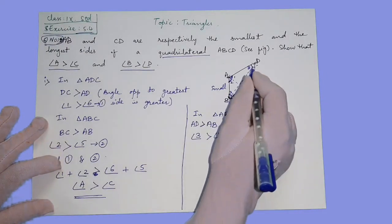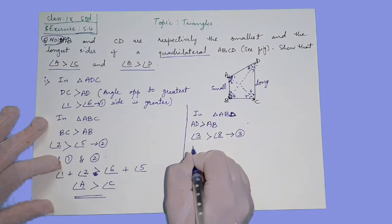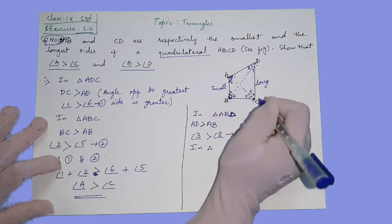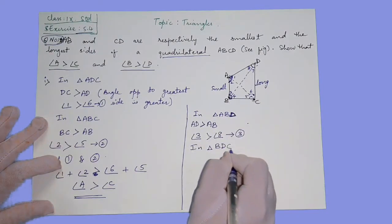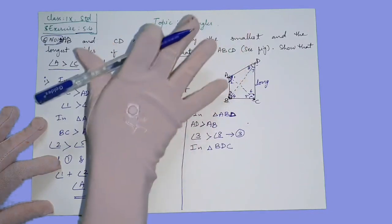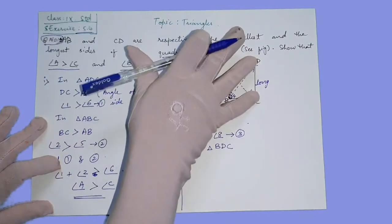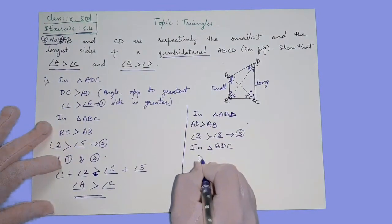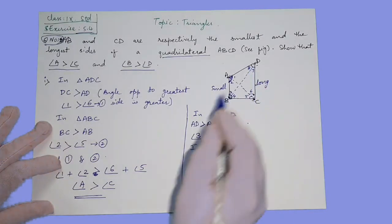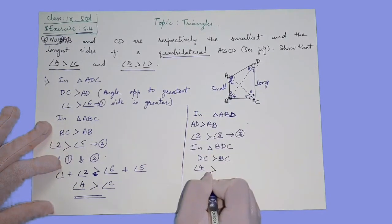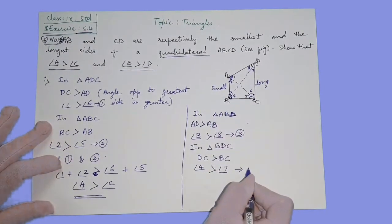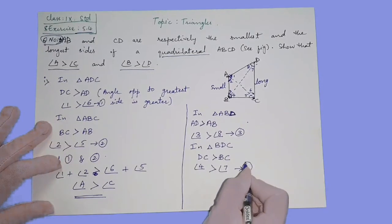Now the next triangle, the downside triangle. In triangle BDC, DC is the longest so BC is smaller. We can write DC is greater than BC. Now DC is the opposite angle and BC is the opposite angle. Again adding the both equations.